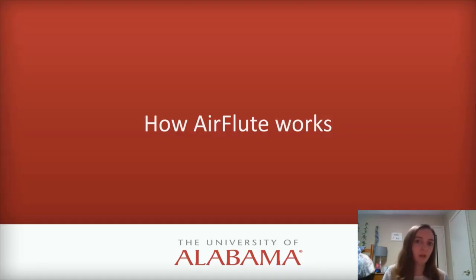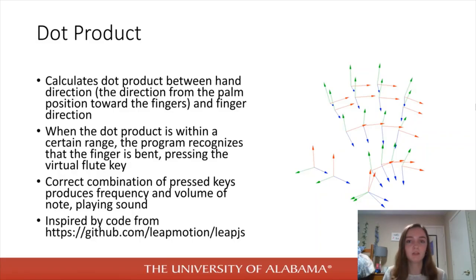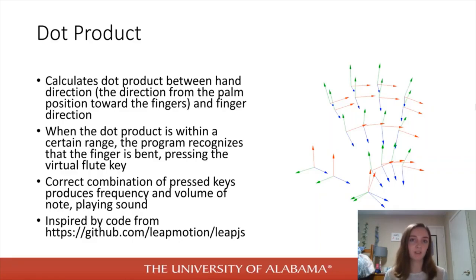Now I'm going to talk a little bit about how the Air Flute works. To determine whether or not a key is pressed, I used the dot product between the direction of the fingers pointing and the hand direction. If this dot product is within the correct range, the Air Flute recognizes that the finger is bent and then presses the virtual key. With the correct keys pressed, it produces the correct volume and frequency for the Air Flute.